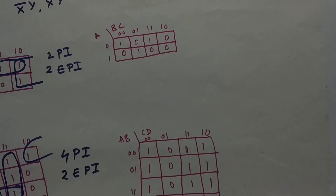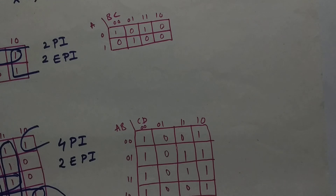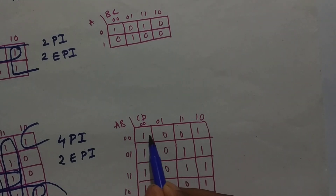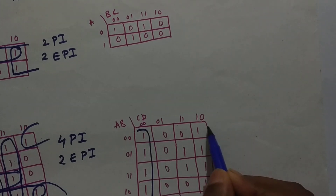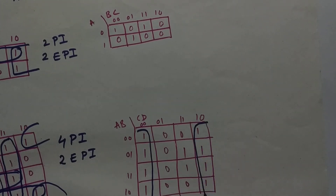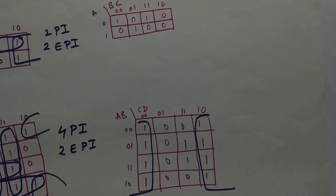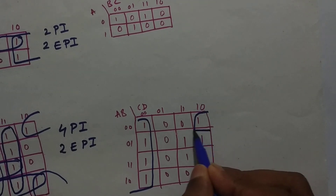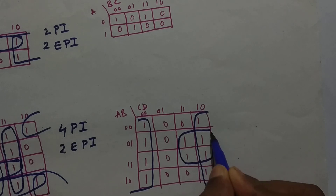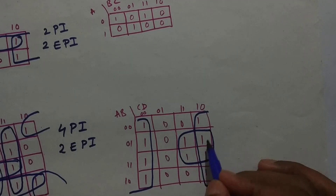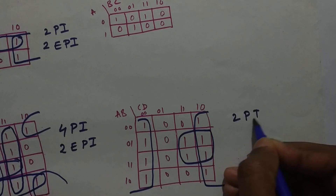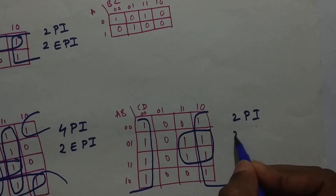Now let's go to another example. In this example, as you can see, we have an octate in it. First we will take the largest group, not the small one. So we have the octate, and next we can clearly form a quad here — we cannot take a pair, we need to form a quad. So we have two prime implicants and two essential prime implicants.